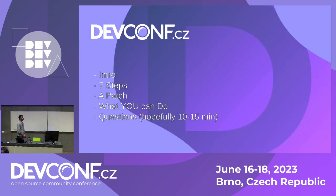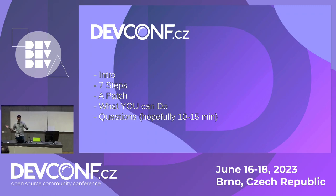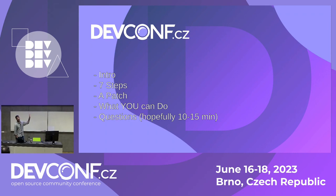This is the last talk, so I want to be really quick and leave extra time for questions. It's my first talk, so I'm not sure how I'll get the timing right. I'll go with an introduction, then quickly jump into the seven steps, walk through a recent glibc patch to show what goes into writing one, talk about what you could do to contribute, and then questions at the end.